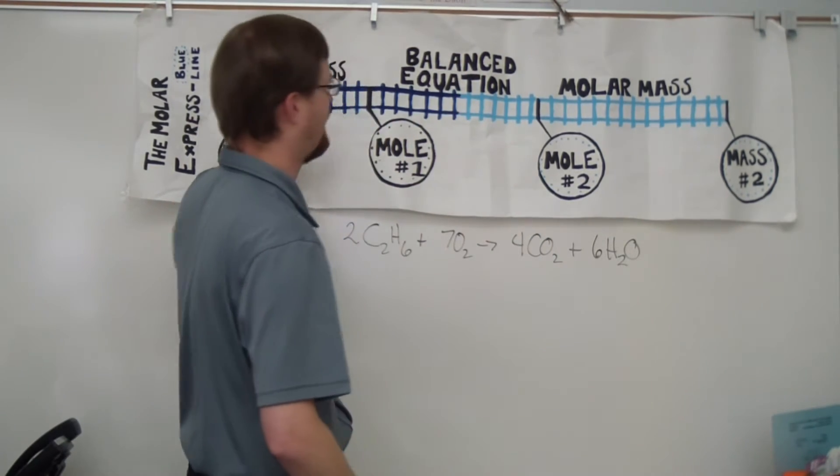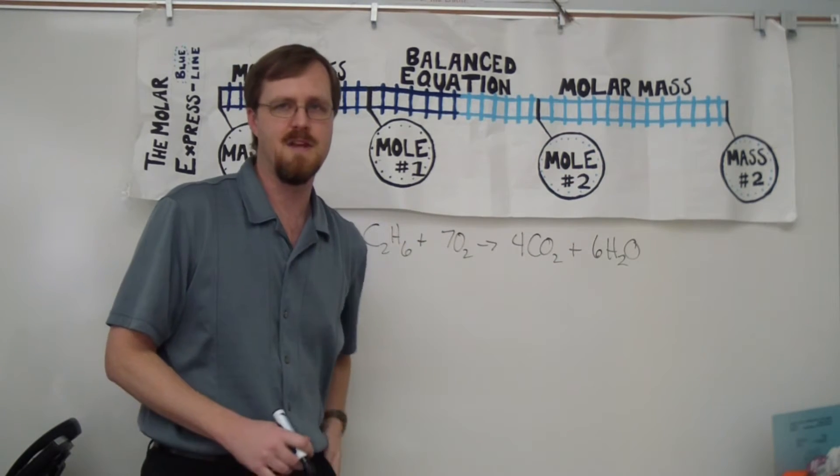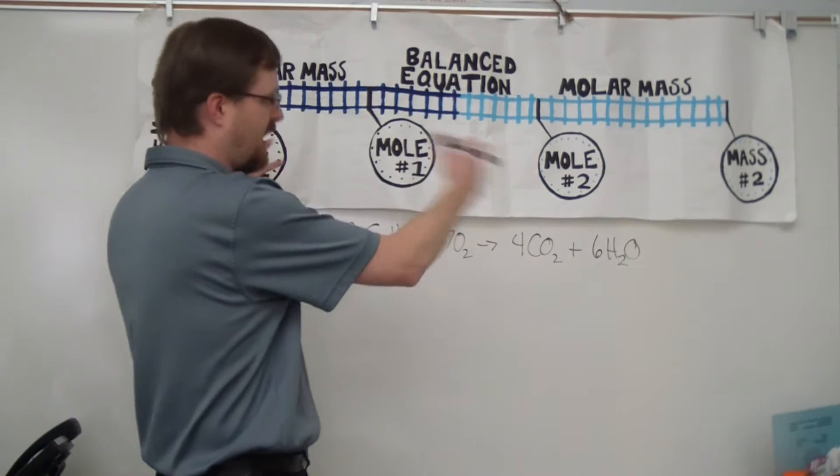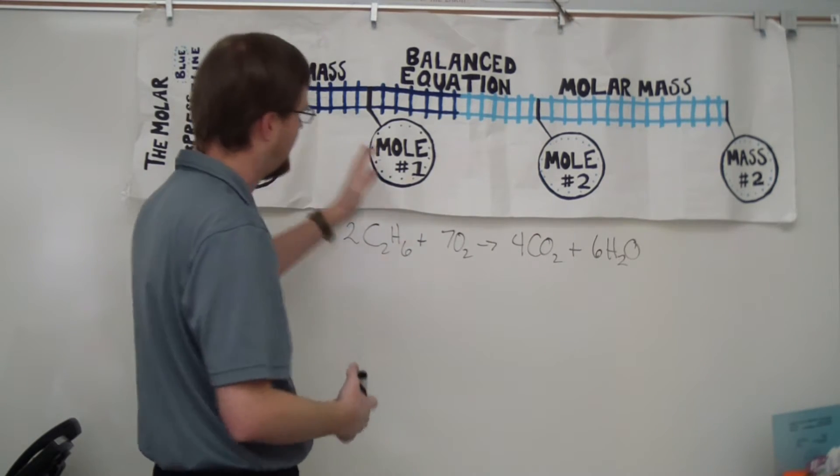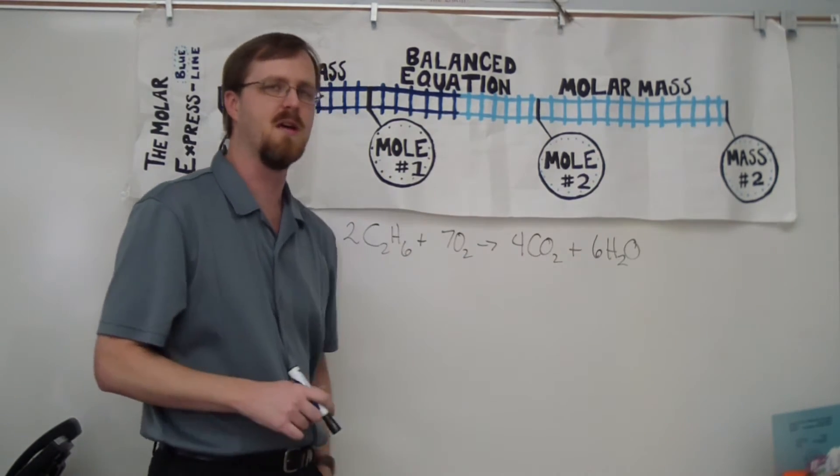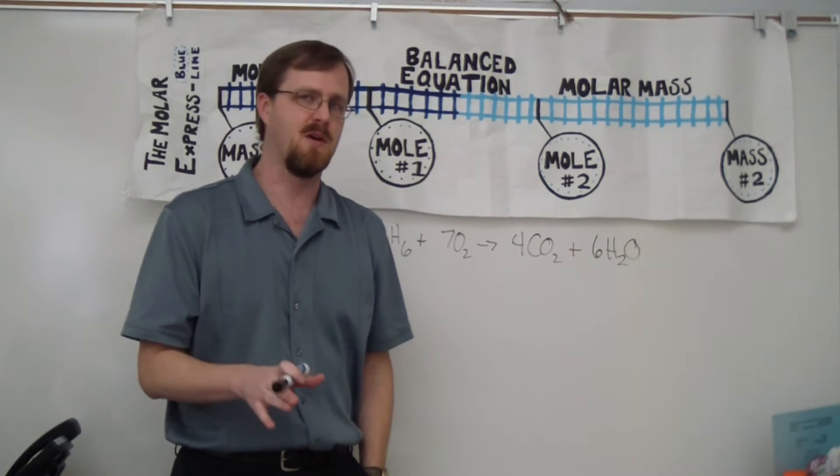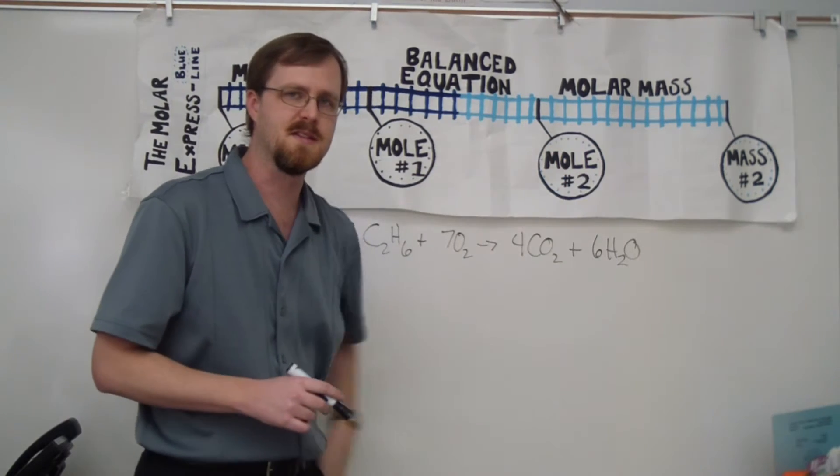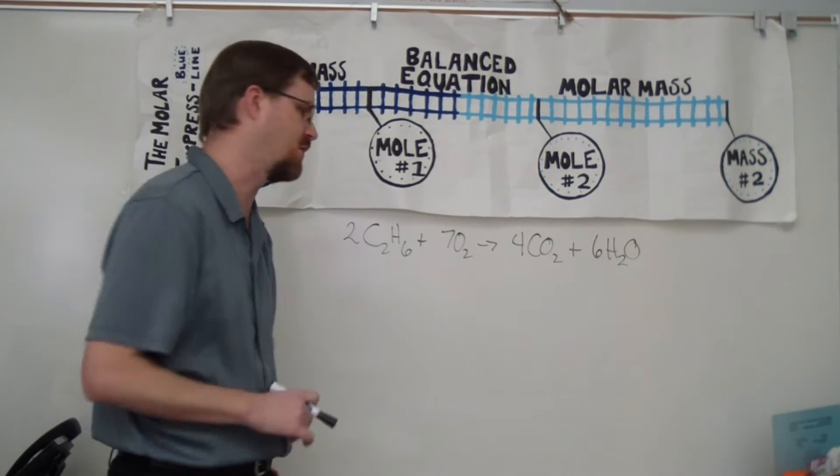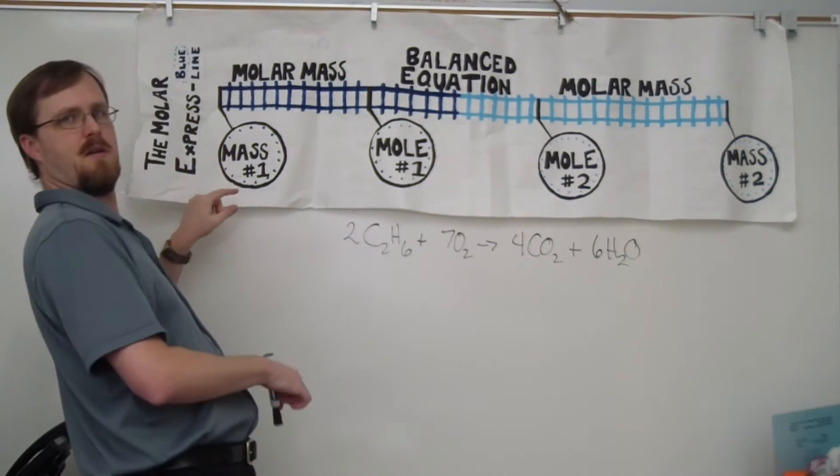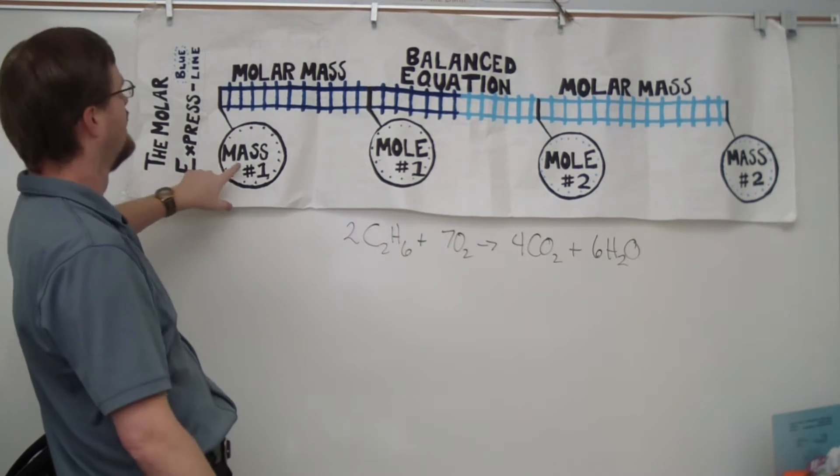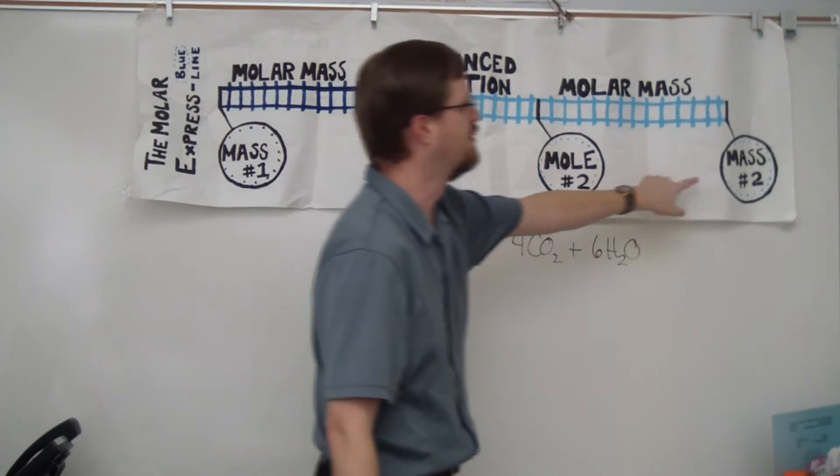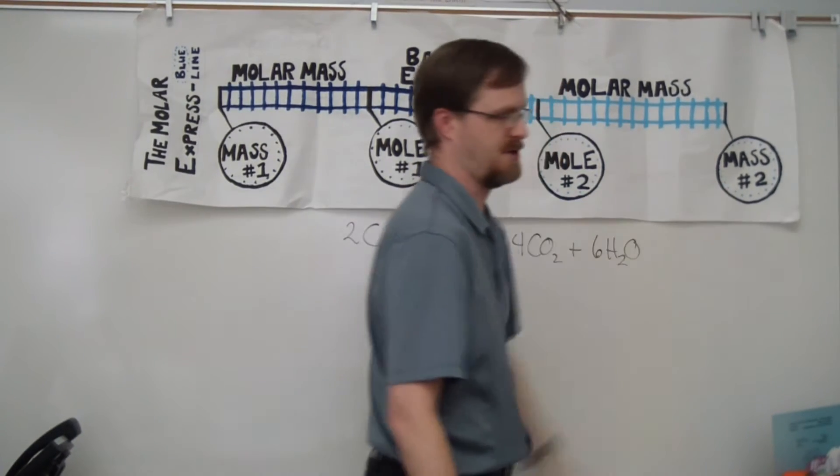Now obviously behind me, what I've got here is another version of the Molar Express. This one is similar, similar concept of the train track, meaning you can't skip steps as you go through it. The main difference for this one, however, is that this one only goes left to right. This is a one-way track. So let me show you the stations here that we've got. So we've got mass one, moles number one, moles number two, and then mass number two.